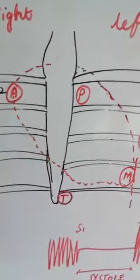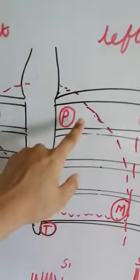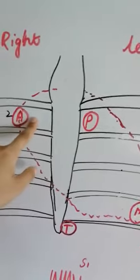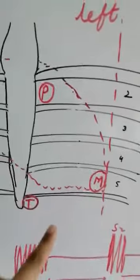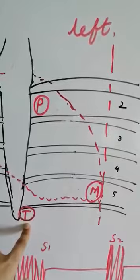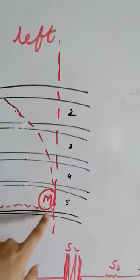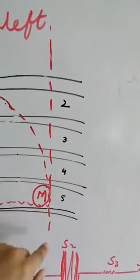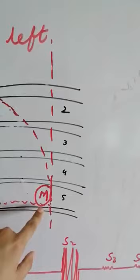These spaces are present on both the right and left sides of the chest. The pulmonary area is located in the left second intercostal space. The aortic area is in the right second intercostal space. The tricuspid area is on the left side of the lower border of the sternum. The mitral area is in the left fifth intercostal space, just medial to the mid-clavicular line. This is also known as the apical area of the heart.